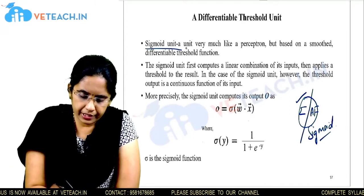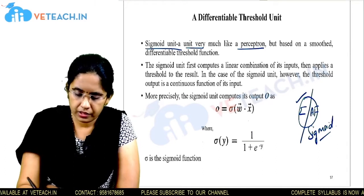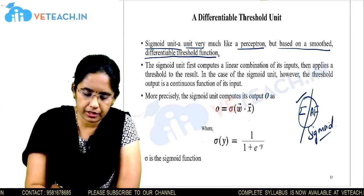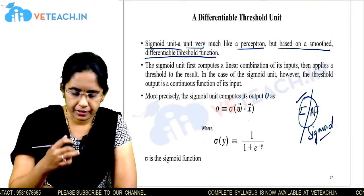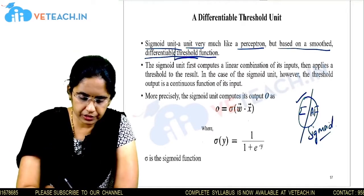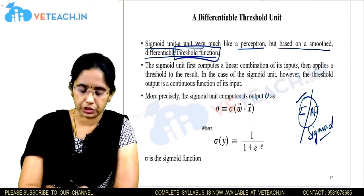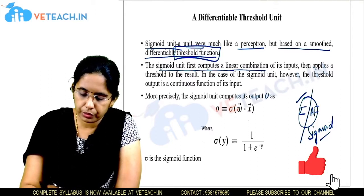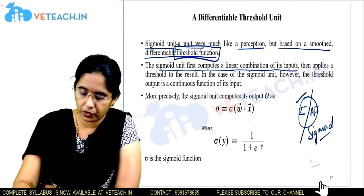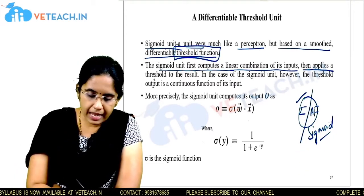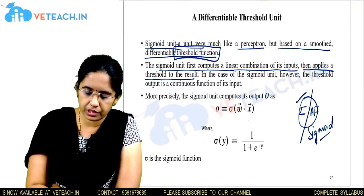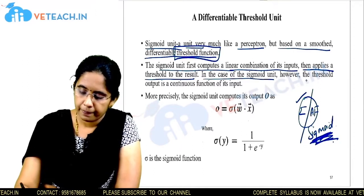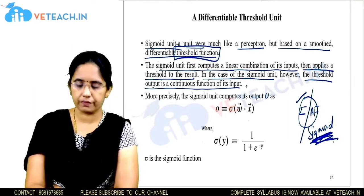The sigmoid unit is a function very similar to a perceptron. While the perceptron uses a step function, the sigmoid function is used for smoothing and can be considered a differentiable threshold function. The sigmoid unit first computes a linear combination of the input parameters as in a perceptron, and that linear combination is applied to the sigmoid threshold function, which is differentiable with respect to its parameters.